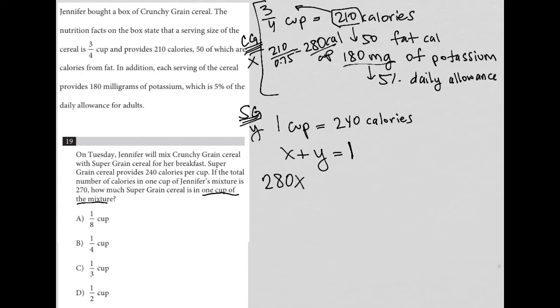So I'll write this underneath, 280 times X plus 240 calories times the amount of cups for the super grain cereal. That's going to all add up to, like the question said, 270. So what we have here is a very traditional system of equations.